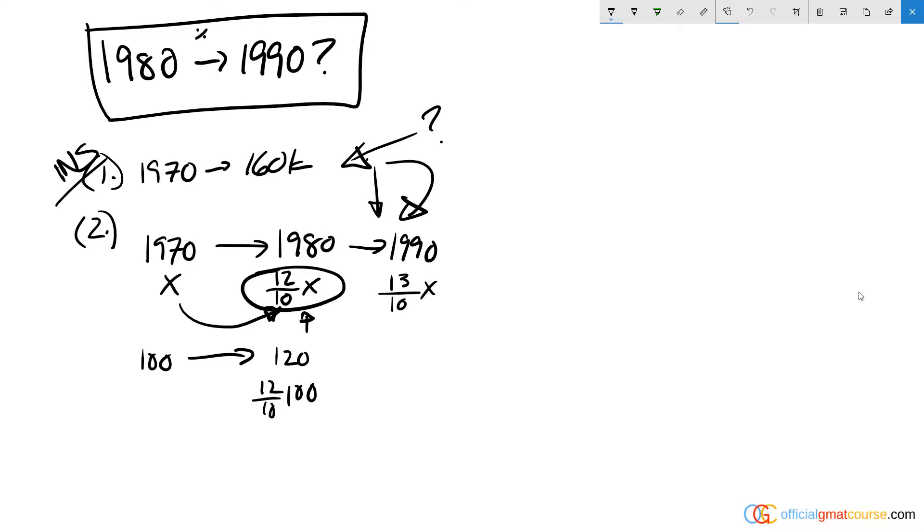Now we're also given that in 1990, the population of K was 30% greater than it was in 1970, which means we're going to end up with 13 tenths of X. Now the question is, can we determine an always consistent percent change from 1980 to 1990 based on these two facts?